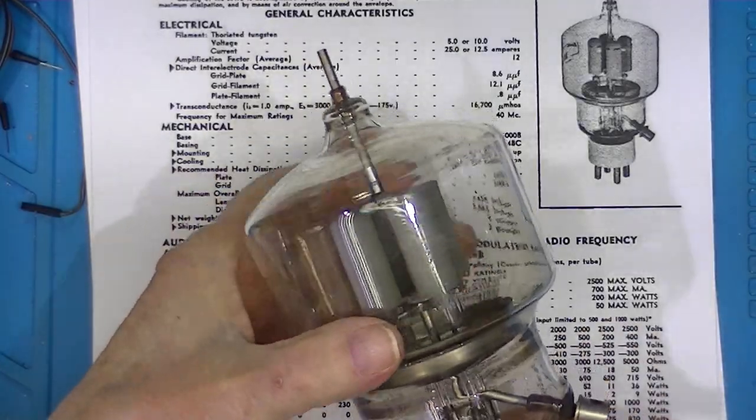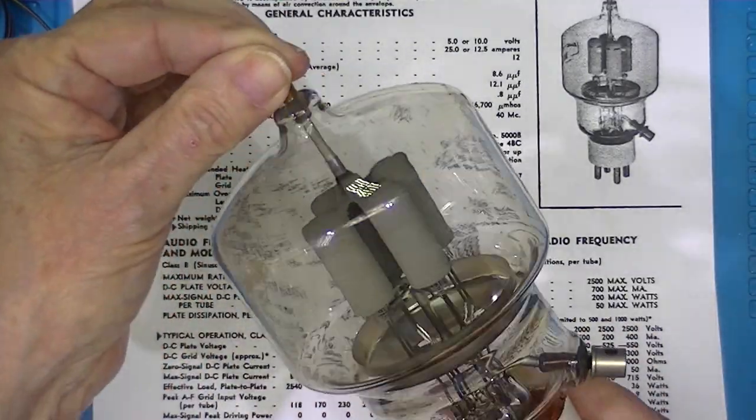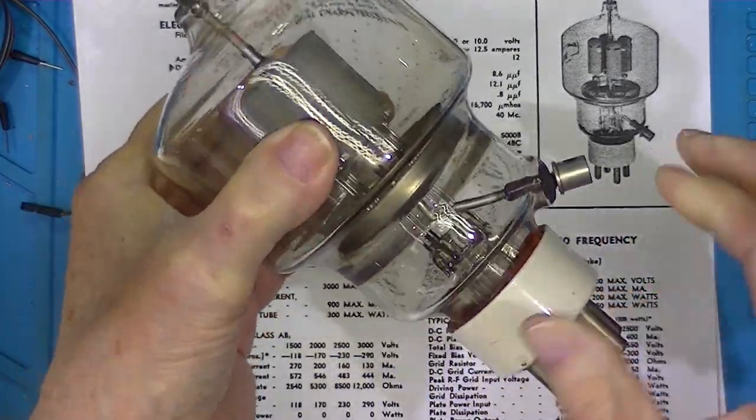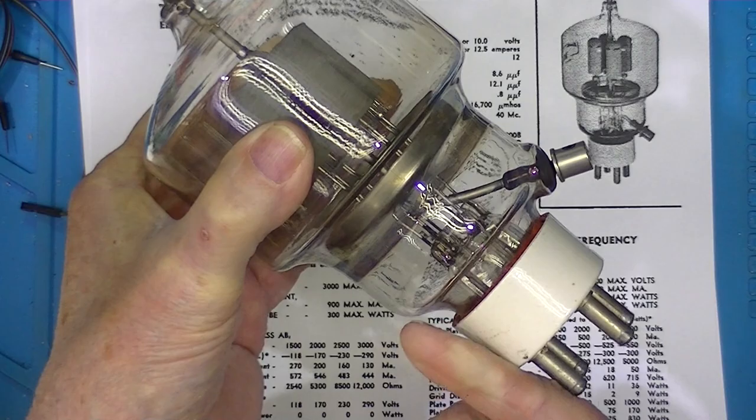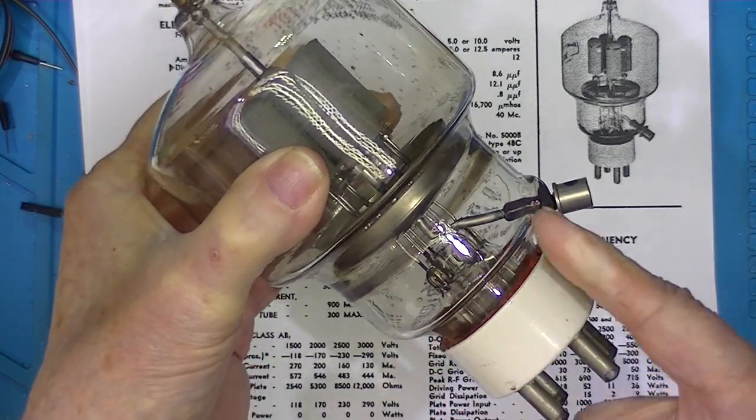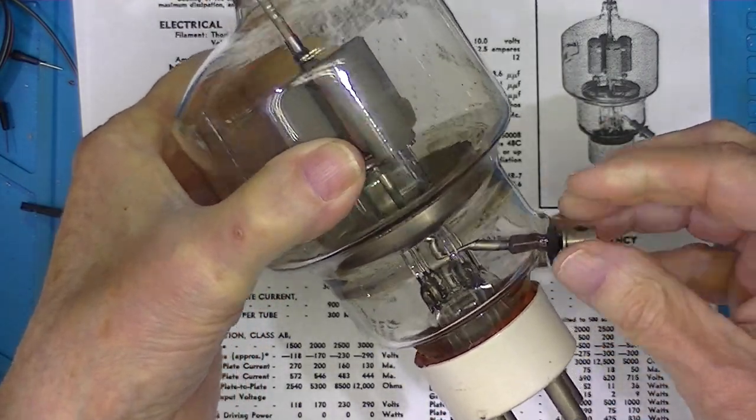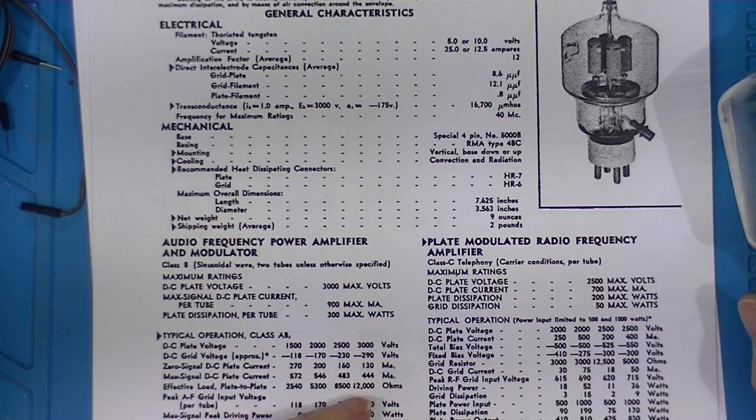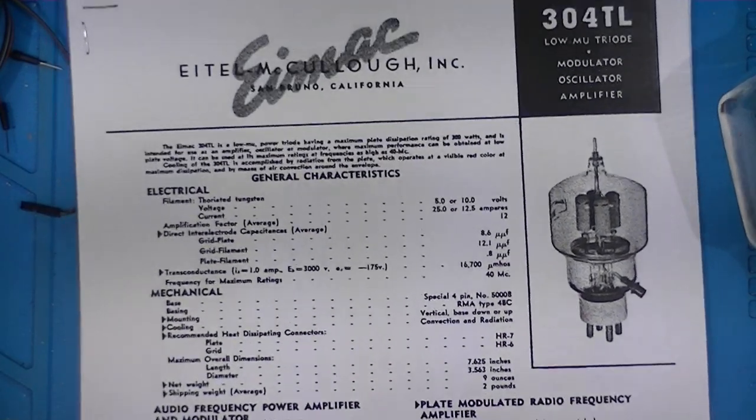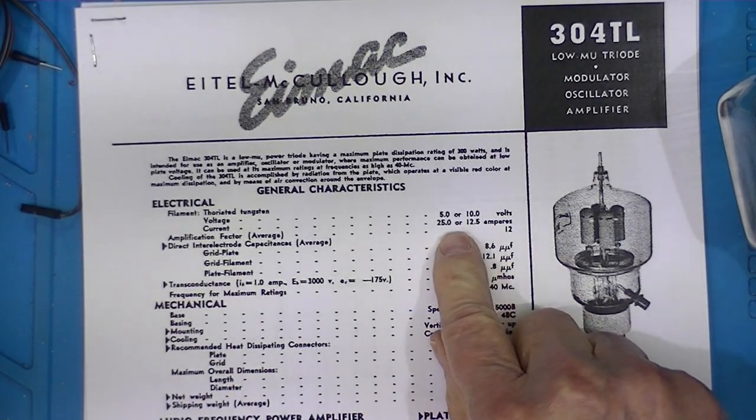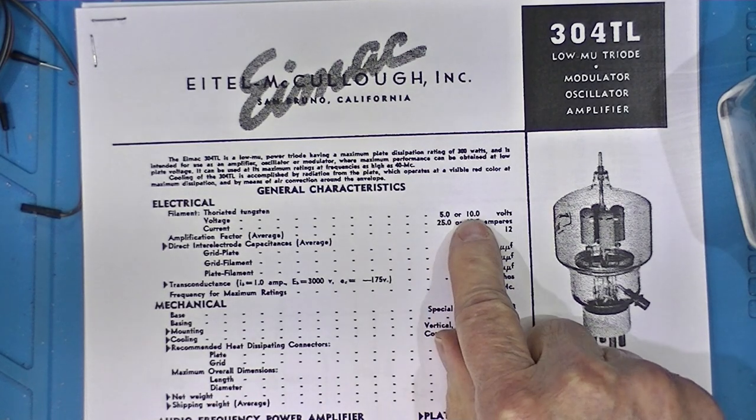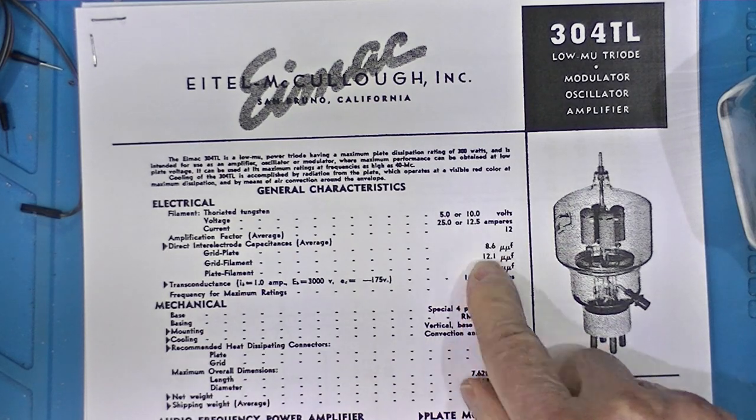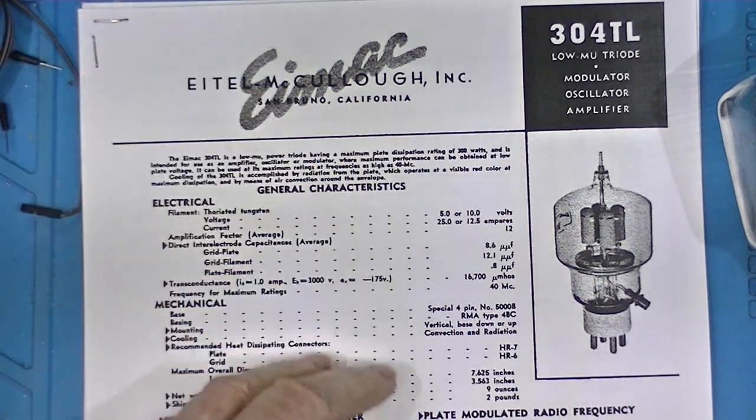In the 304TL we have a plate that comes out the top, grid connection comes out the side. Very early versions had a metal ring around here with a connection to the ring. This tube has a filament that requires either 5 or 10 volts at either 25 or 12.5 amps. The reason that's possible...